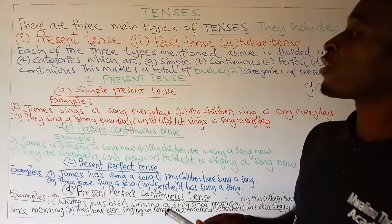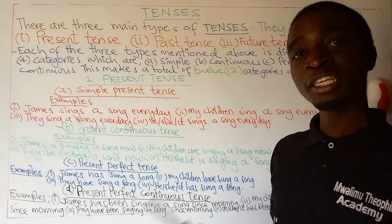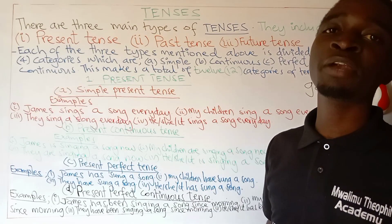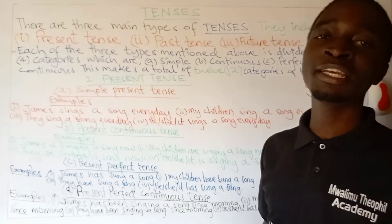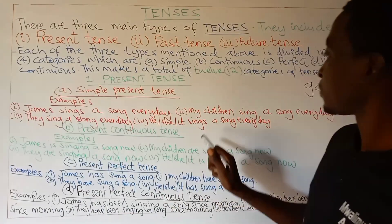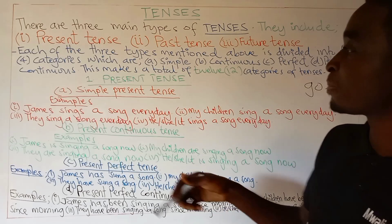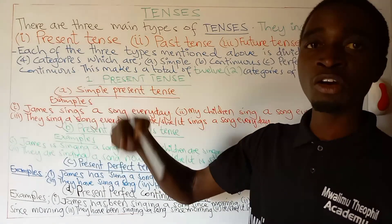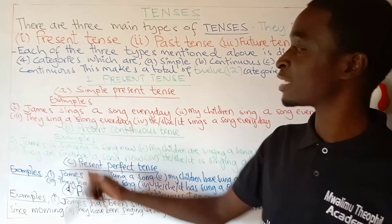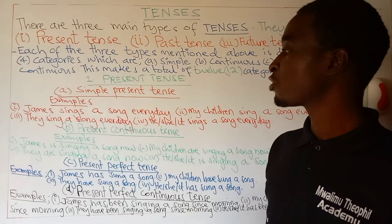For pronouns like they and we, or nouns which are in plural, the verb remains in its infinitive form. As you see here: they sing, my children sing — so my children is in plural also. The verb remains as it is, as you find: sing.